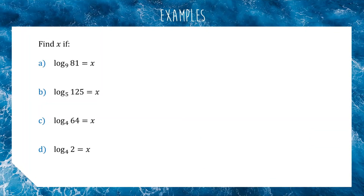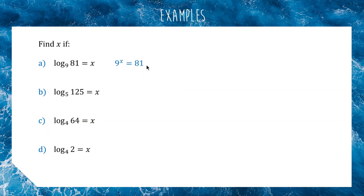Let's do a few examples to get comfortable with logarithms. We're trying to find the value of x where x equals log base 9 of 81. The easiest way is to rearrange it into an exponential equation. Using our trick — this to the this equals this — we write 9 to the power of x equals 81. Now this is easy to solve by inspection: 9 squared is 81, so x equals 2.